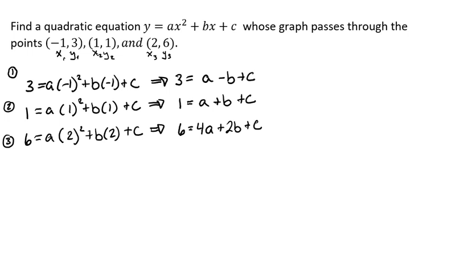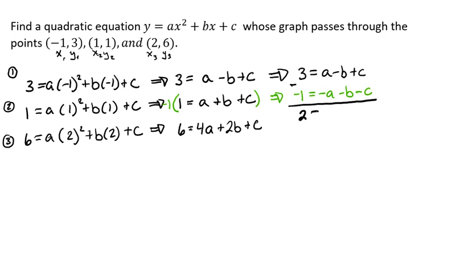We'll keep equation one as it is: three equals a minus b plus c. For equation two we're going to multiply by negative one to get a negative c, giving us negative one equals negative a minus b minus c. Adding these together, the a's cancel out and the c's cancel out, leaving us two equals negative two b. Dividing both sides by negative two gives us b equals negative one.